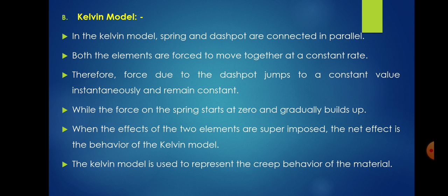The next model is the Kelvin model, in which the spring and dashpot are connected in parallel. Both elements are forced to move together at a constant rate; therefore, force due to the dashpot jumps to a constant value instantaneously and remains constant, while the force on the spring starts at zero and gradually builds up. When the effects of the two elements are superimposed, the net effect is the behavior of the Kelvin model. The Kelvin model is used to represent the creep behavior of the material.